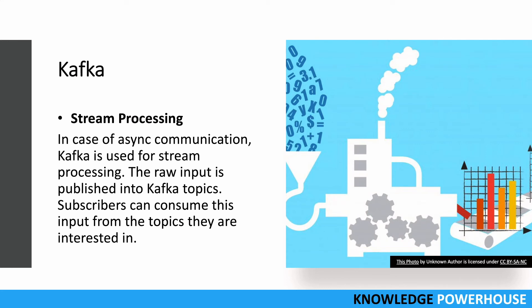Stream processing is another use case — it involves asynchronous communication, as opposed to synchronous communication like APIs. For example, if people are trading stocks, there is a stream of orders coming in. Kafka can process those orders: the raw input is published to Kafka topics, and downstream systems that process those orders can listen to those topics and act on them. Subscribers consume input from the topics they are interested in. All the ordering stream comes into Kafka, and from there different downstream systems — for business users or normal consumers — can handle it.